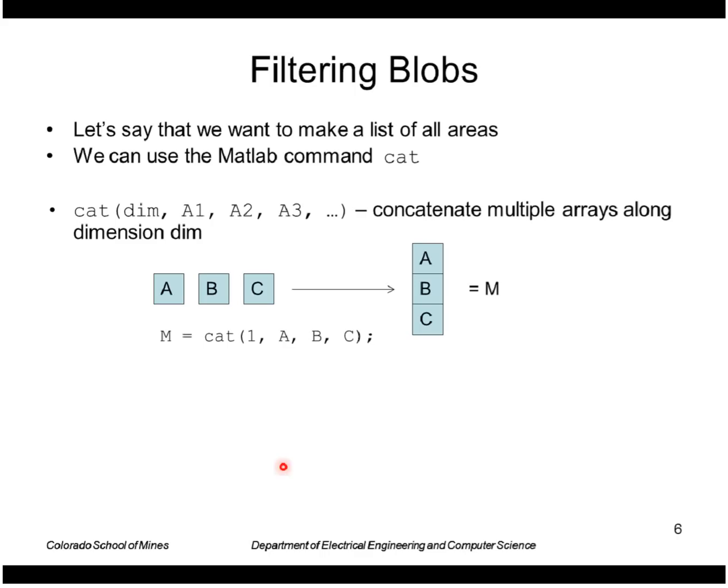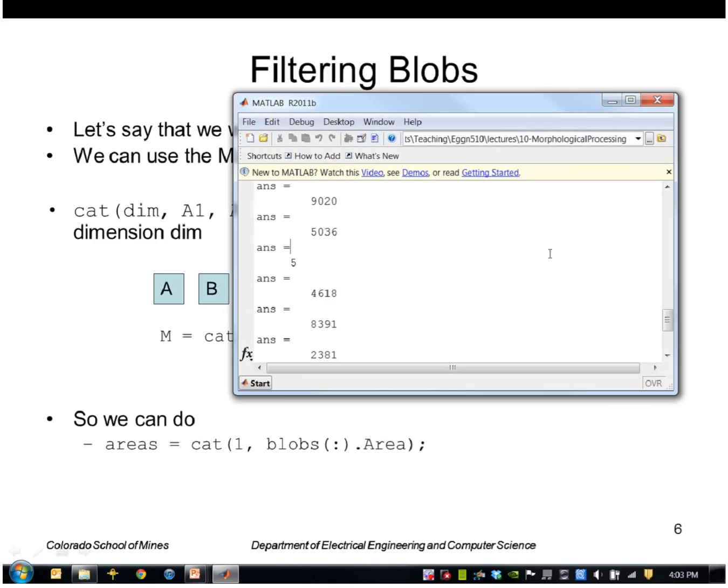For example if I have arrays ABC and I want to concatenate them in dimension one, one meaning the vertical, two is the horizontal, that would produce something called M which is a single array like that. So I could do this expression here.